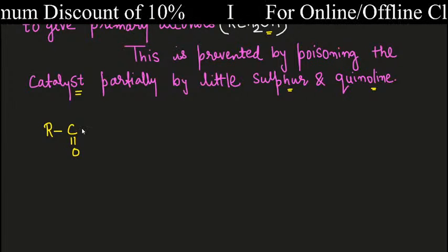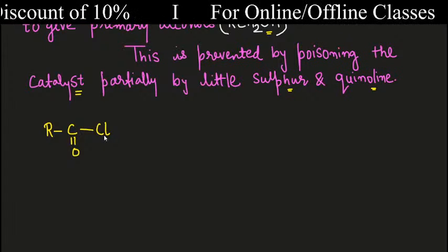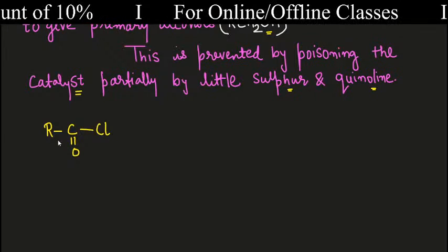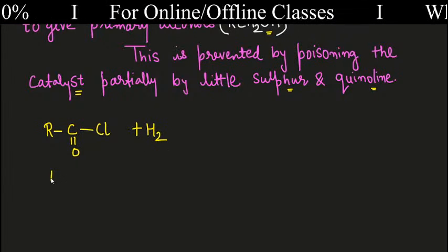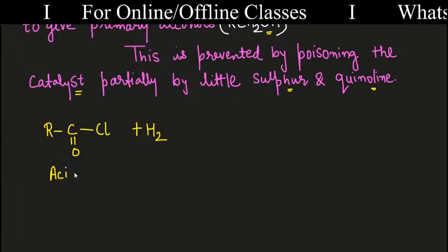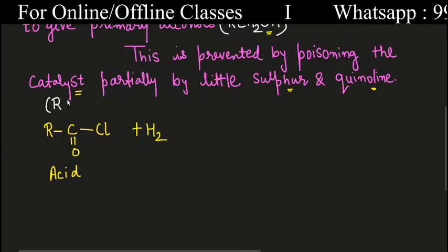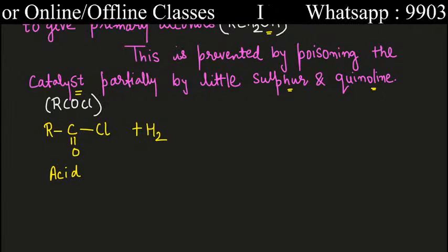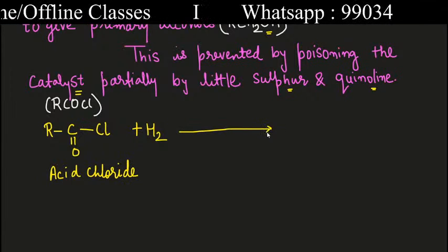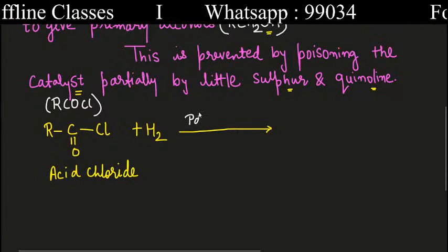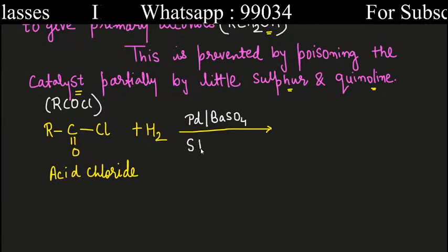Let's write this clearly. If you take any acid chloride — RCHO is aldehyde, and RCOCl is acid chloride written in short. When you give hydrogen with palladium and barium sulfate catalyst, aldehyde is going to form. But if you reduce further, then alcohol is going to form — so you will have to do poisoning.